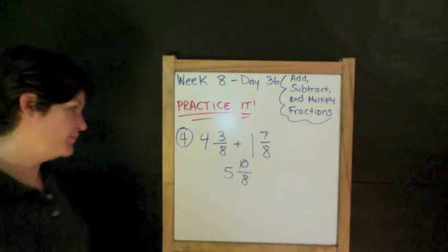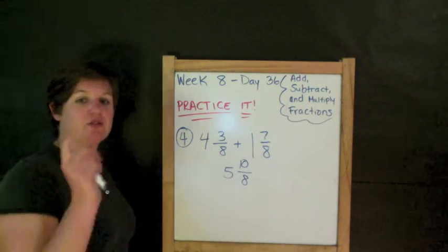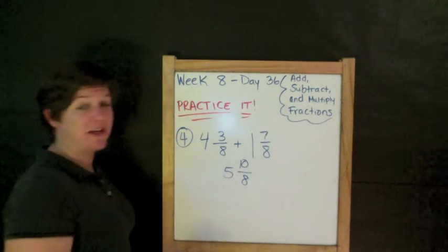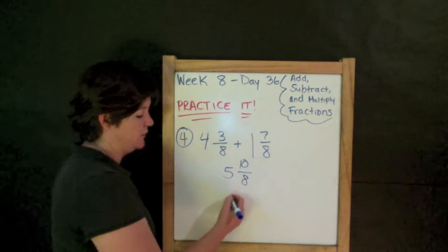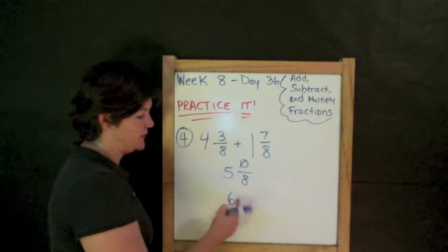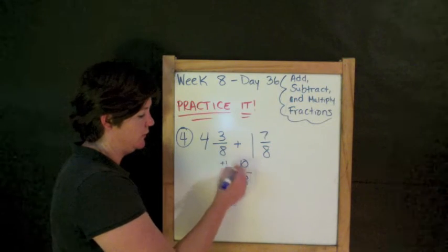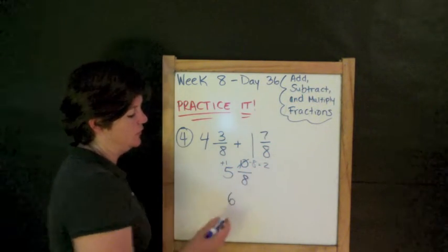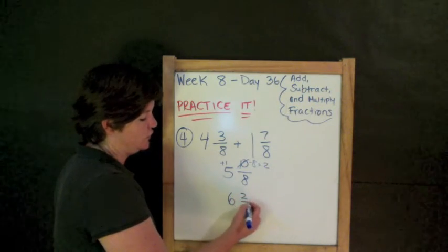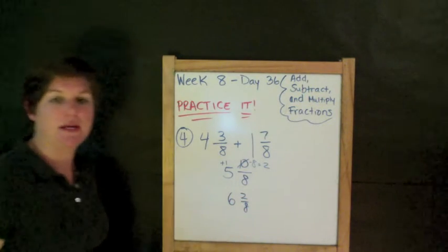But here's the problem. My numerator is greater than my denominator. So, I can actually have another hole there. I can do, like that, 6. So, I have 1 here. 4 plus 8, that would be 2. So, 6 and 2/8 would be my answer. Okay.